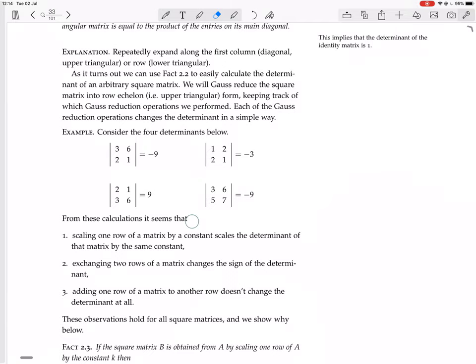From these calculations it seems that scaling one row of a matrix by a constant scales the determinant by the same constant. Exchanging two rows of a matrix changes the sign of the determinant. Adding one row of a matrix to another doesn't change the determinant at all.